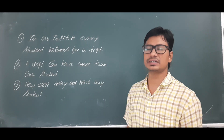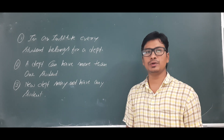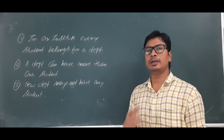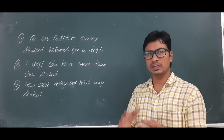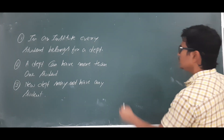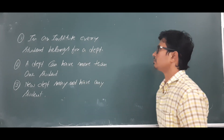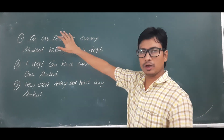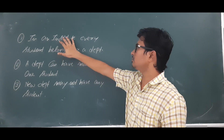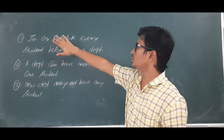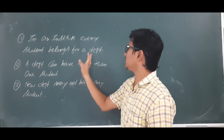Using these requirements, they are asking us to construct the ER diagram. Before constructing it, we need to find out the cardinality and participation for each entity. We have two entities: student and department. Institute could also be an entity, but there is no relationship given between the institute and the student or department, so I will not consider institute as an entity.